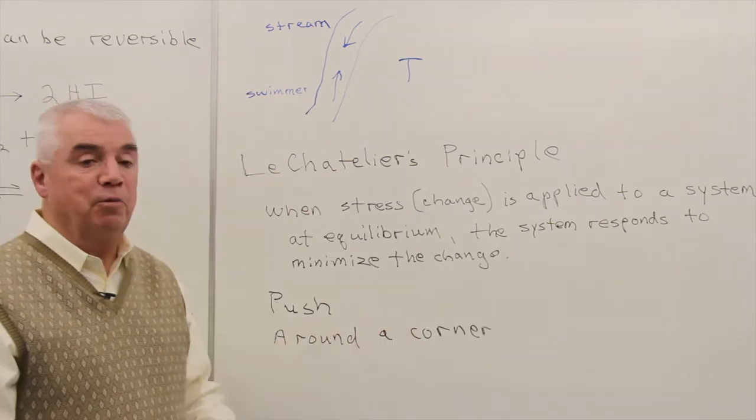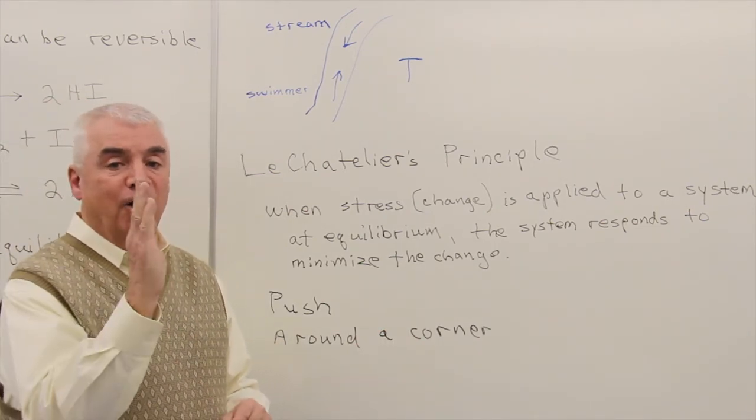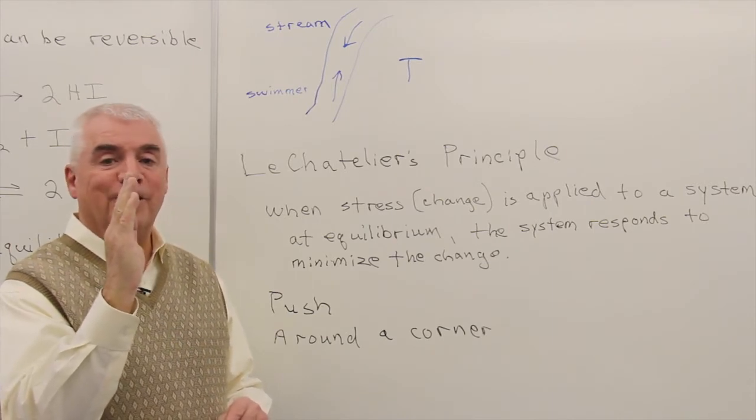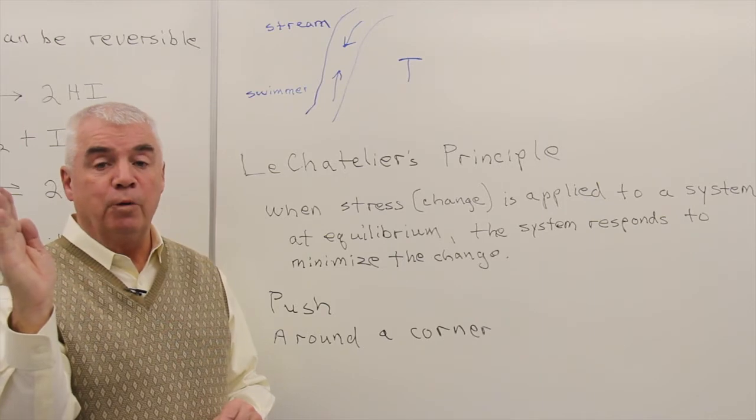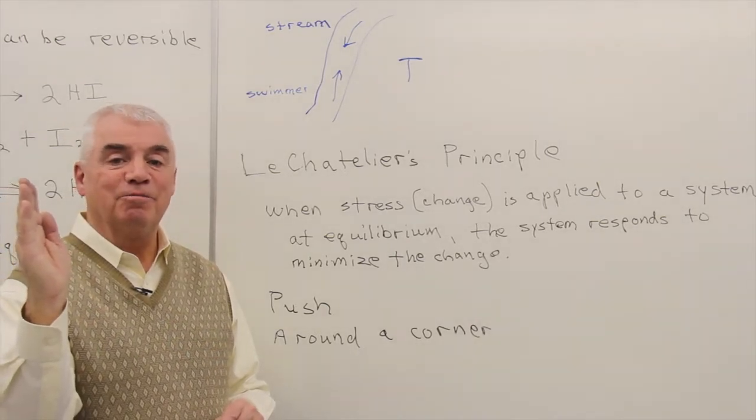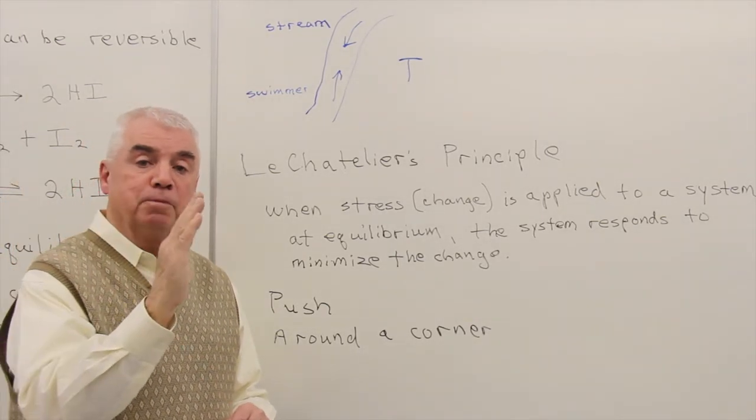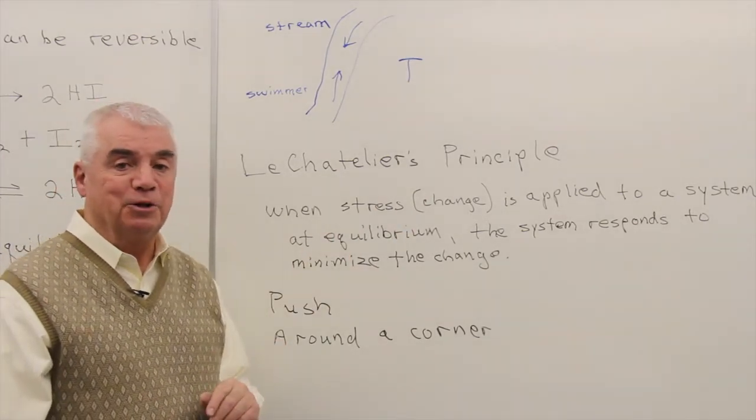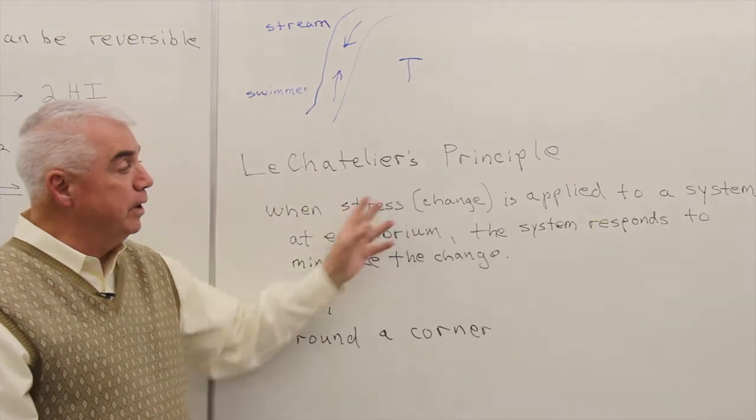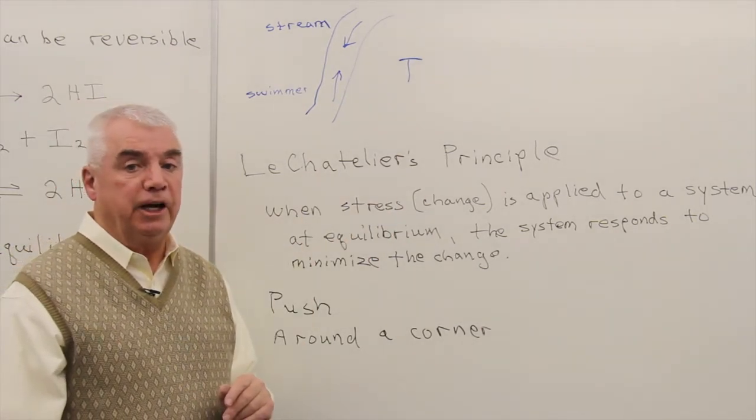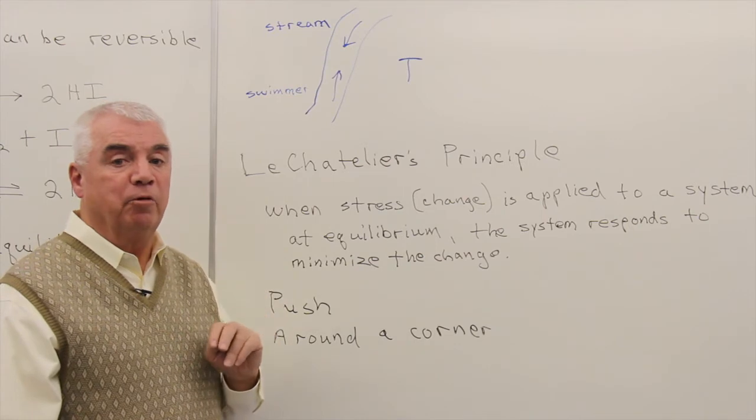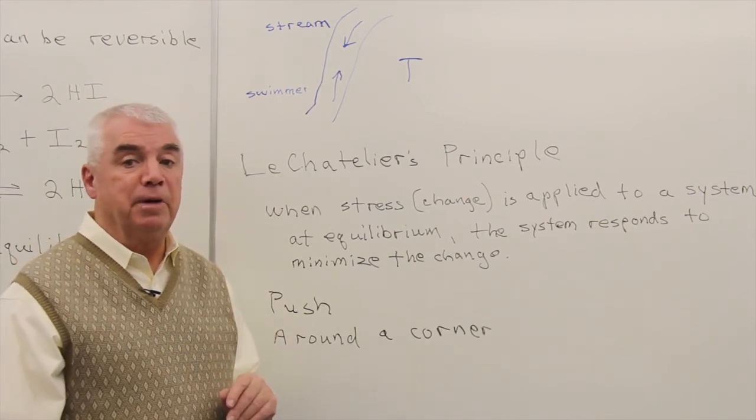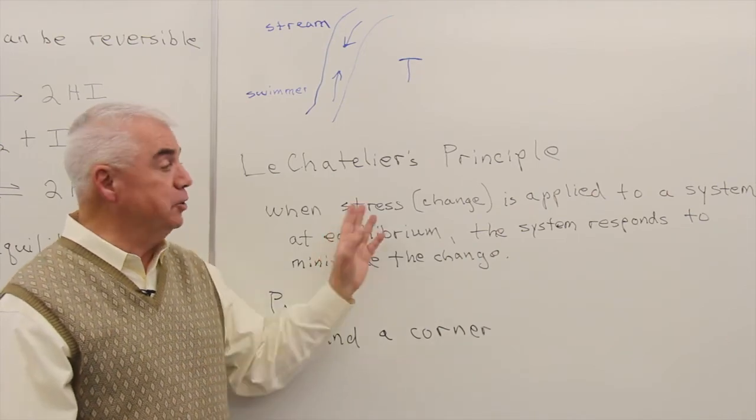Or another example, if you're going around a corner in a car. Here you are in the vertical direction, and as you go around the corner, centrifugal force throws you out. What do you do? You try to minimize that change by leaning in the opposite direction. That's what Le Chatelier's principle says: when we apply a stress or a change to these reactions at equilibrium, the reaction is going to respond by trying to minimize the change.